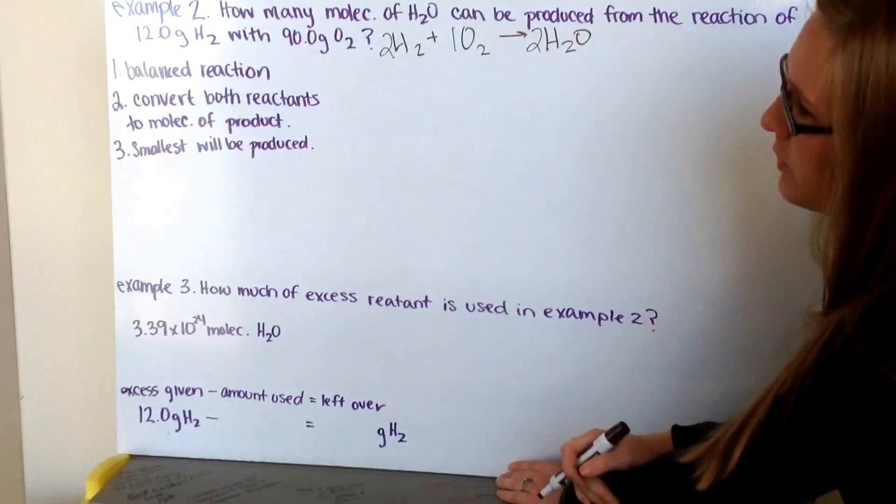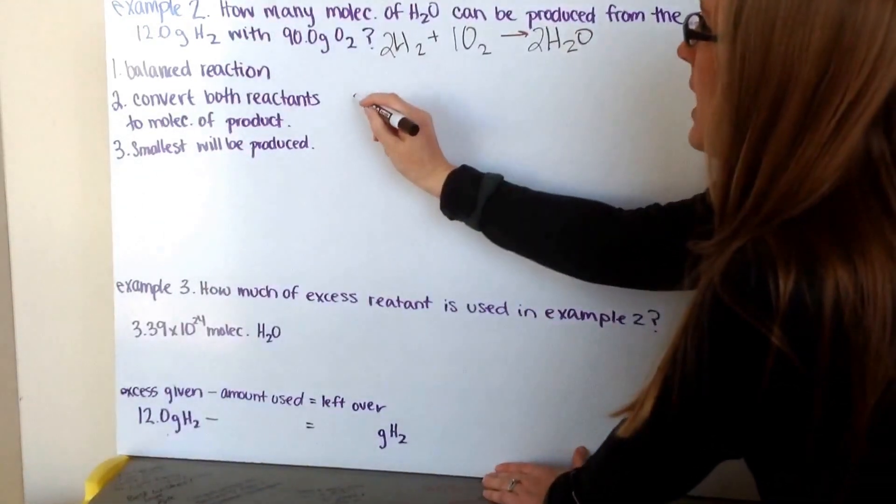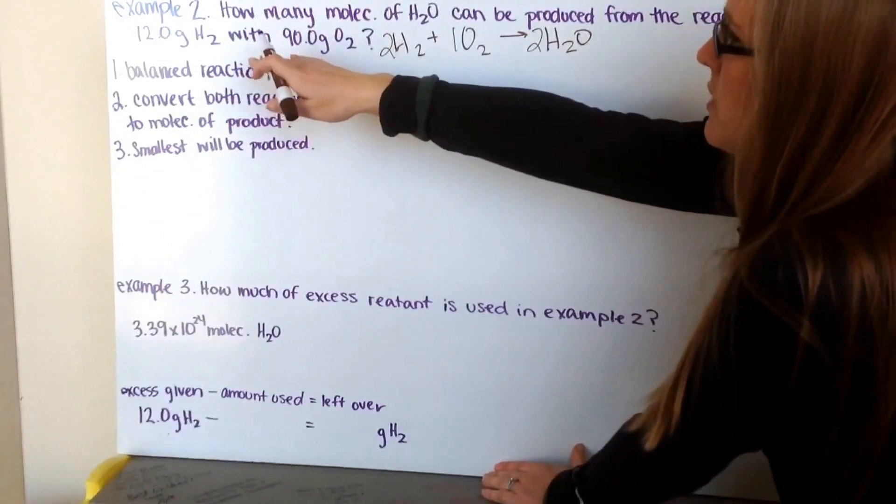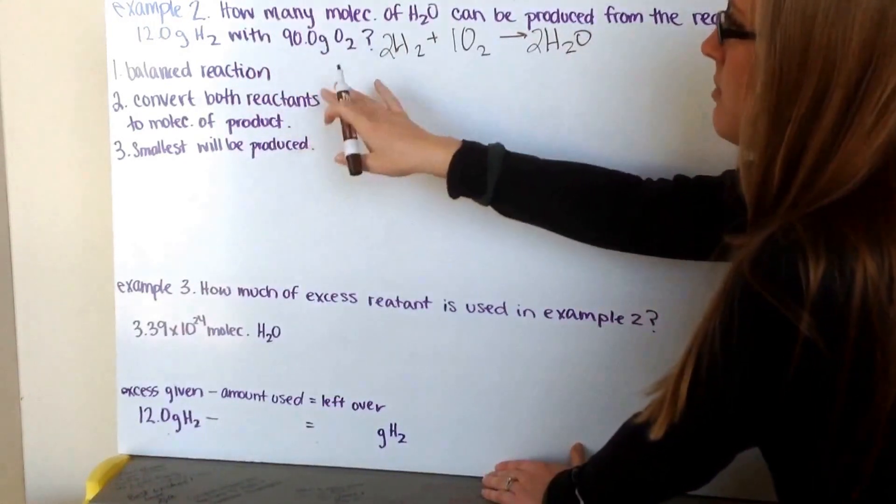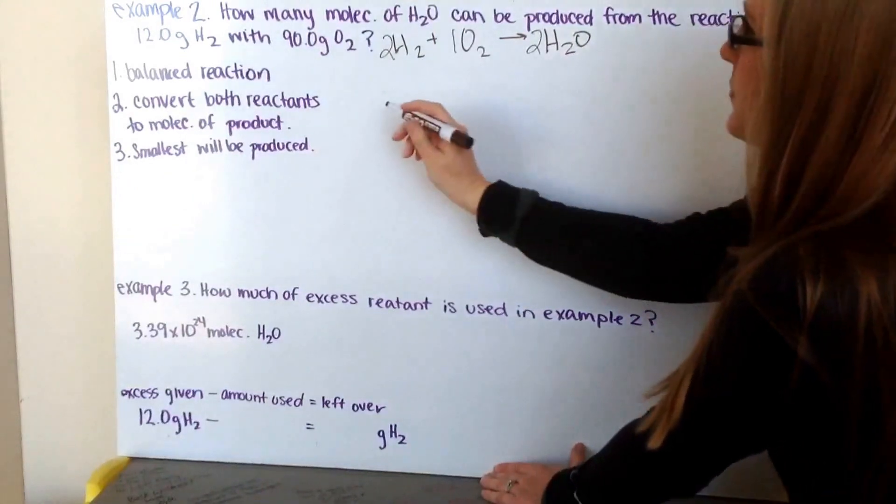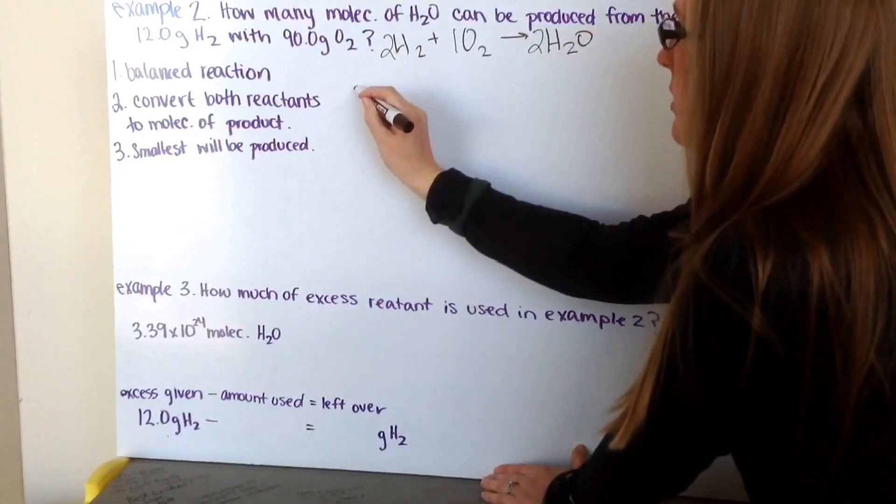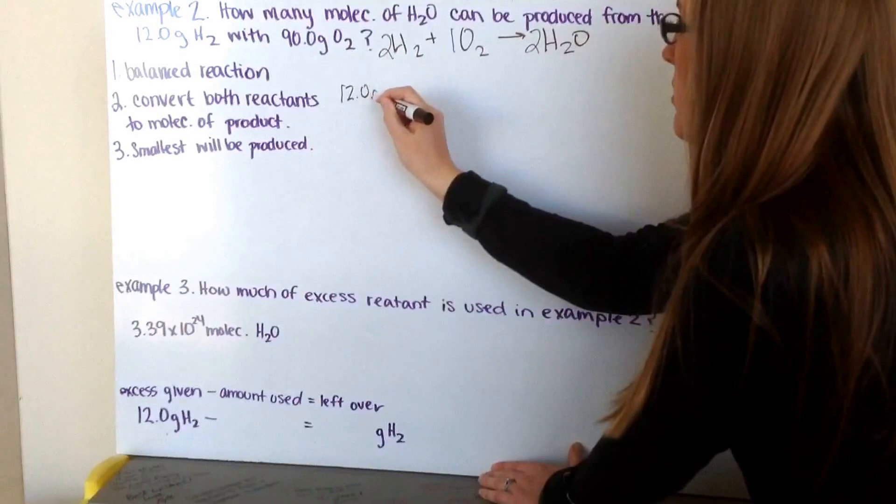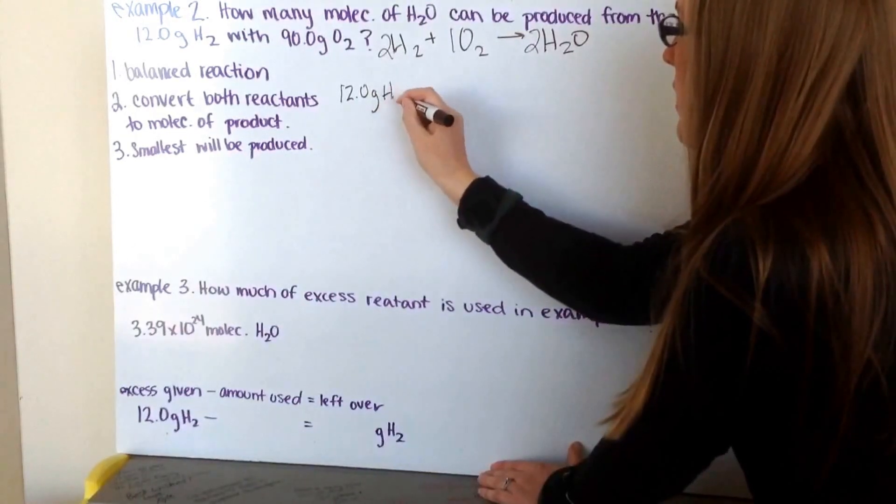Next, I want to convert both reactants to molecules of product. So, I'm going from grams of hydrogen and grams of oxygen both to molecules of product.